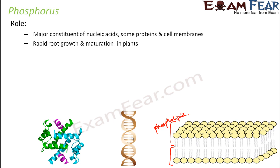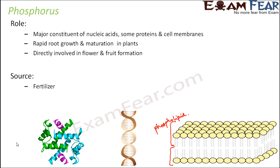Phosphorus is a constituent of so many important biomolecules. It also helps in rapid root growth and the maturation of plants so that plants become mature on time. We can say that phosphorus plays a role in the formation of reproductive structures in a plant and is directly involved in flower and fruit formation at the right time. The source of phosphorus is fertilizer, as well as orthophosphates in rocks and soil. Phosphorus does not enter the atmosphere, so it remains in land, rock, and soil minerals, occurring as phosphate or orthophosphate, which is the form in which it is absorbed.